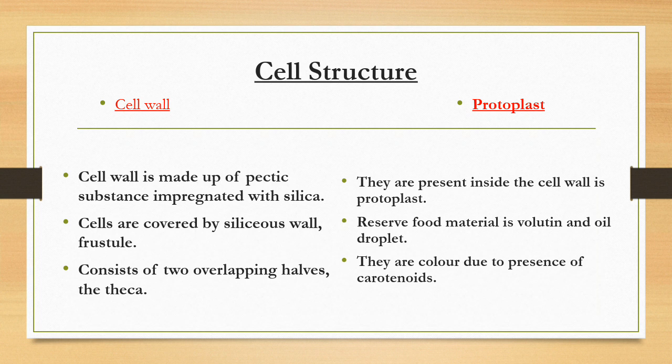Cell structure: The cell wall is made up of pectic substance and silica. Cells are covered by a silica wall or frustule consisting of two overlapping halves or thecae — an upper theca and a lower theca. The protoplast is present inside the cell wall, with reserve food material in the form of volatiles or oil droplets. Cells are colored due to the presence of carotenoid pigments.